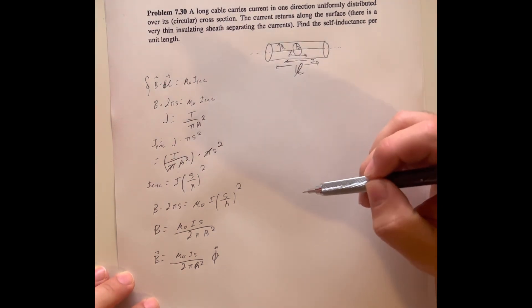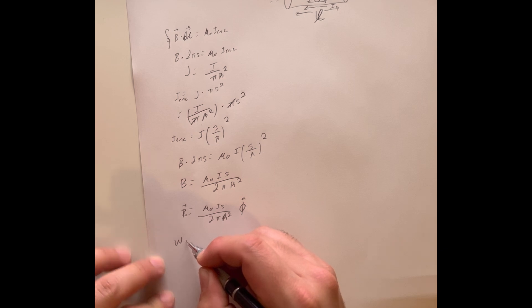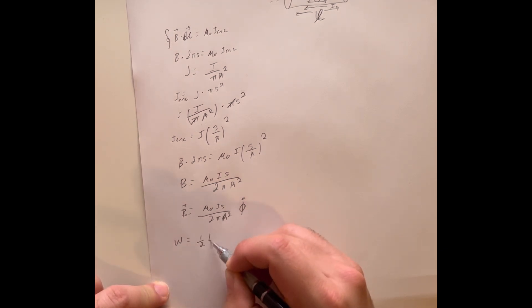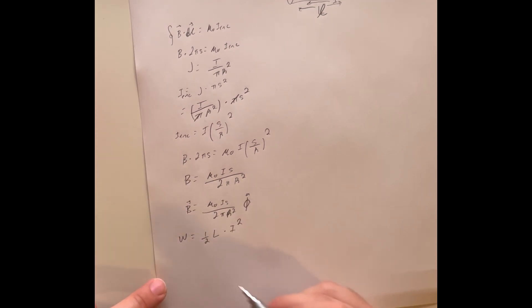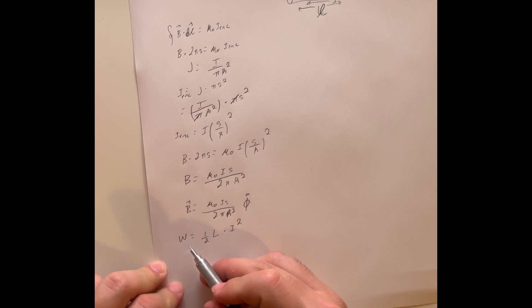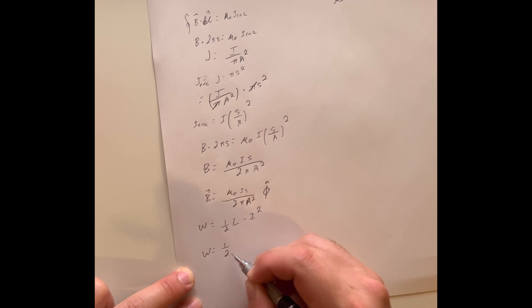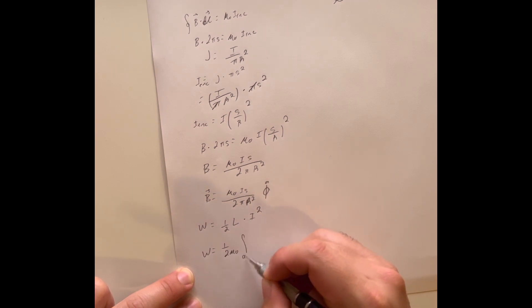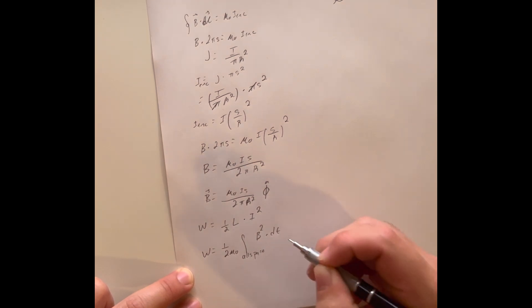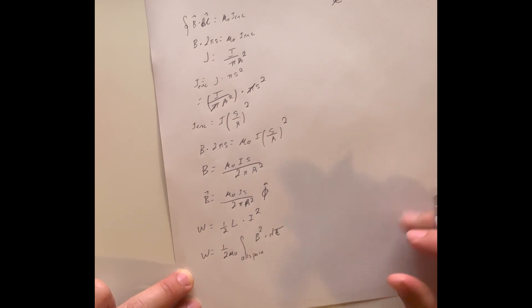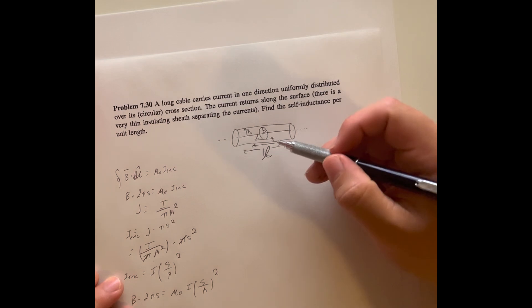Now that we have the magnetic field, we recall that self-inductance is related to stored energy by the equation: W = (1/2) L I², where W is the stored energy. The stored energy is given by: W = (1 / 2μ₀) times the integral over all space of B² dτ, where this integral will be limited to the inside of our cable only.